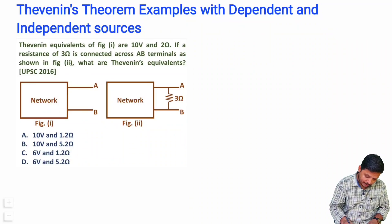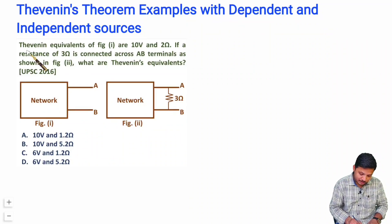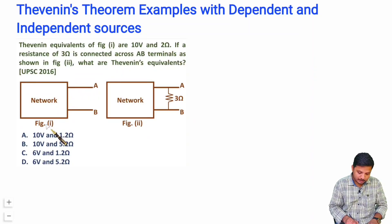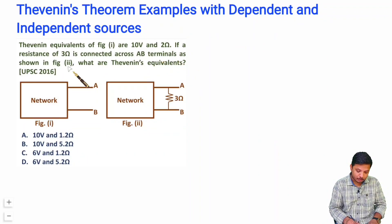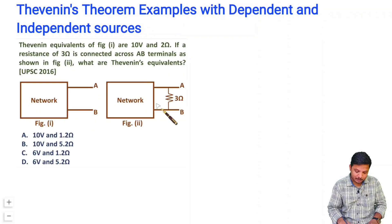In the first question, Thevenin's equivalent of Figure 1 is given as 10 volts and 2 ohms. If a resistance of 3 ohms is connected across AB terminals as shown in Figure 2, then what is the Thevenin's equivalent of that circuit? In Figure 2 we are connecting 3 ohms in parallel, and then we identify the equivalent Thevenin's of this circuit.